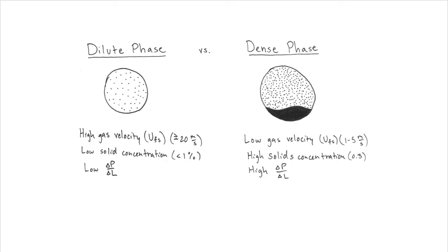In dense phase transport, which is pictured to the right, the particles interact very constantly due to high concentration of solids and the low gas velocity. There is more pressure drop in dense phase due to friction. At some points, the particles may even begin to settle out, which is known as saltation.